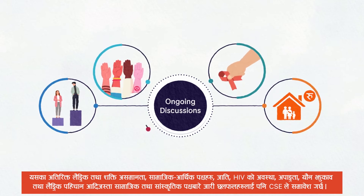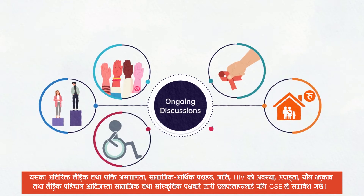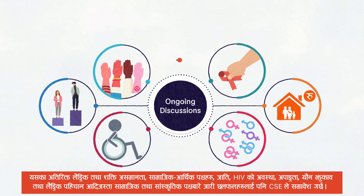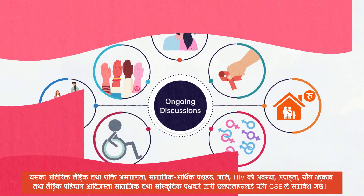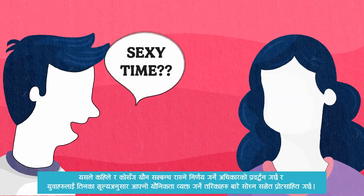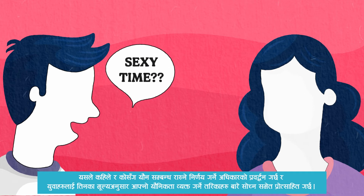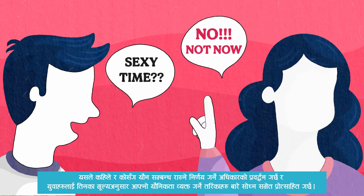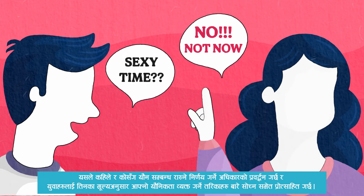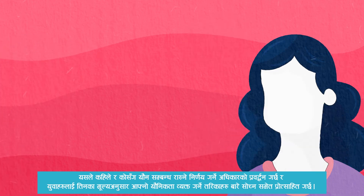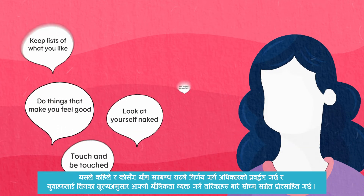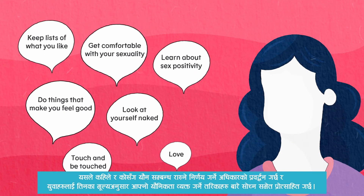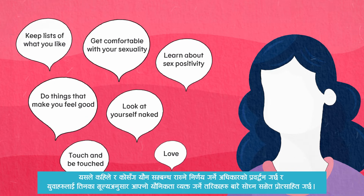These factors include socioeconomic factors, race, HIV status, disability, sexual orientation, and gender identity. CSE promotes the right to choose when and with whom a person will have any form of intimate or sexual relationship, and focuses on encouraging young people to think about ways to express their sexuality in line with their values.